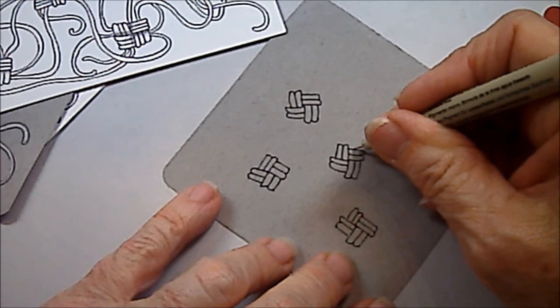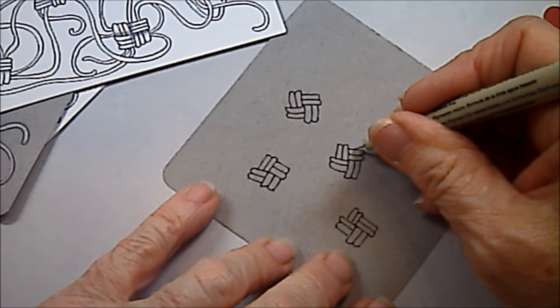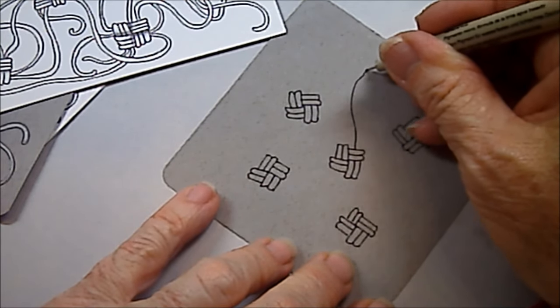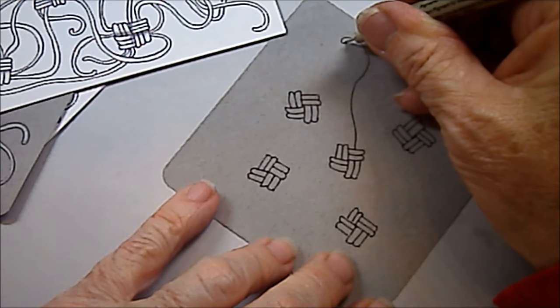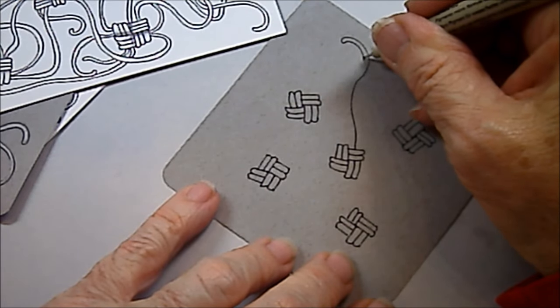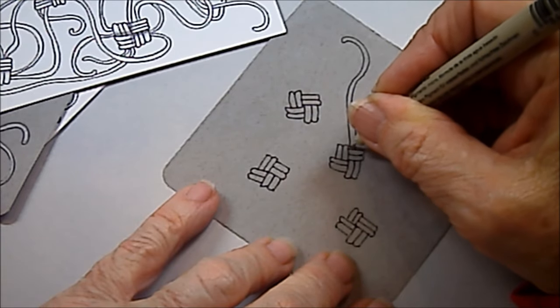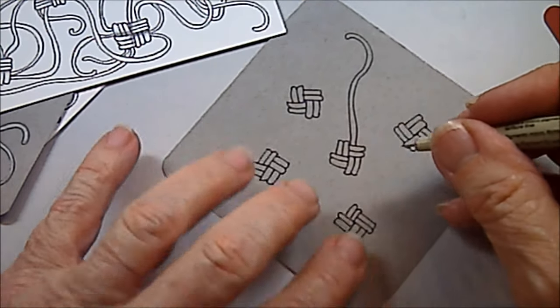I'm just going to start out with one, with the middle one. And then I like to start with my line coming out of the center. So think of that as the center. And we'll come up. And I'm going to curve around. And this is just going to come back down and hook on. So it looks like that rope is going out.